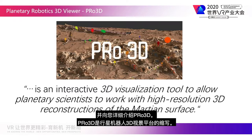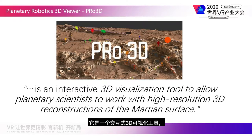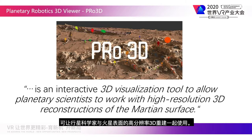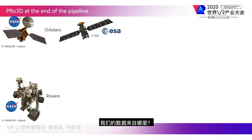Pro3D is short for the Planetary Robotics 3D Viewer. It is an interactive 3D visualization tool to allow planetary scientists to work with high-resolution 3D reconstructions of the Martian surface.